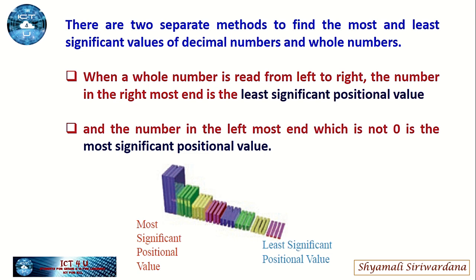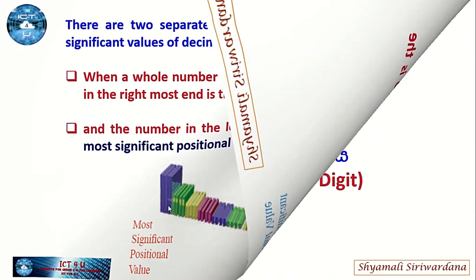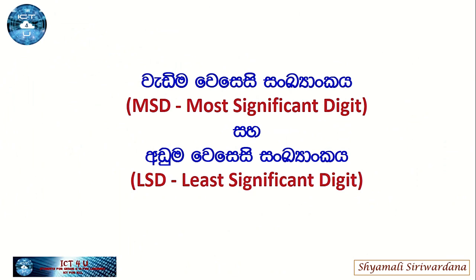Here is the least significant positional value reading right to left, and here is the most significant positional value. Here is a lesson over MSD and LSD — let me explain the most significant digit and the least significant digit.